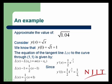So, we get that the equation of the tangent line is l(x) minus the y value, which is 1, is equal to the slope, which is 1/2, times x minus the x value, which is 1. Bringing the minus 1 to the other side, we get l(x), the tangent line through (1,1) to the curve y equals square root of x is equal to 1/2(x plus 1).